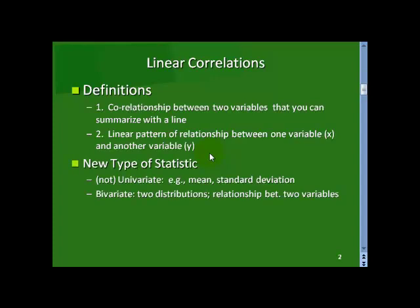And it's important to recognize we now have a new type of statistic that is not univariate, like the ones we've looked at so far with the mean, standard deviation, all that stuff. It's bivariate. There's two distributions, and we're looking at the relationship between those two distributions. By as in bicycle or two.